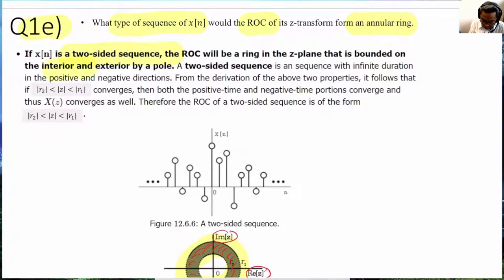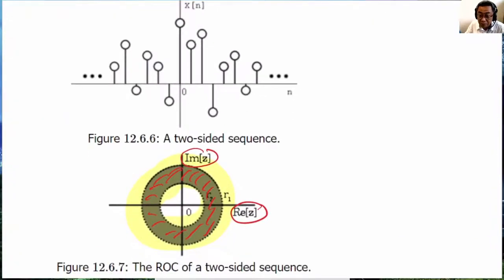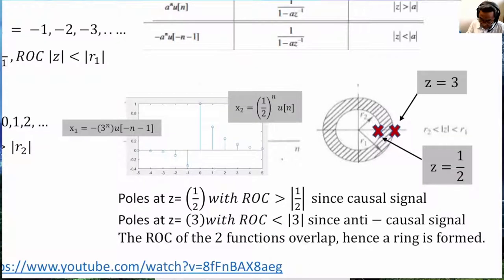And the sequence is bounded by two poles. One at this position with radius R2 and the other one with radius R1. Let's see an example. So, we have a two-sided infinite sequence.